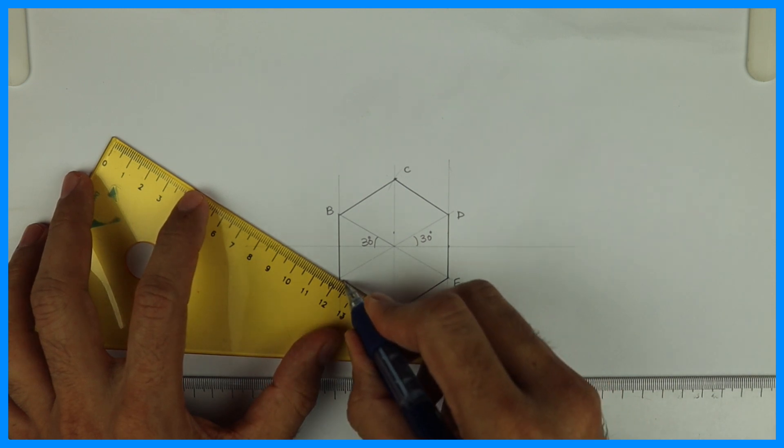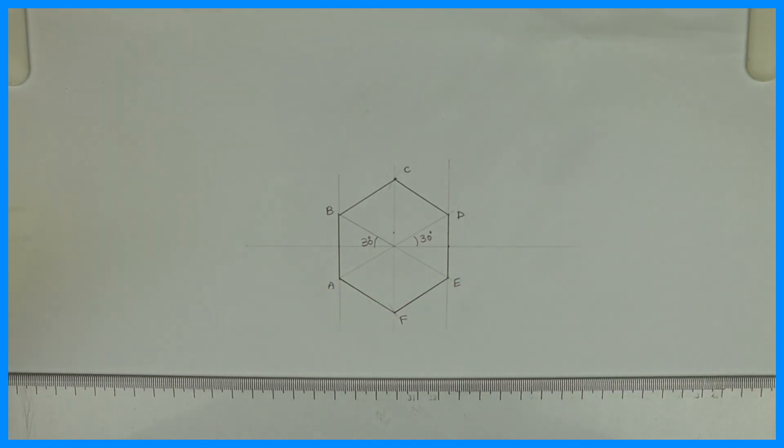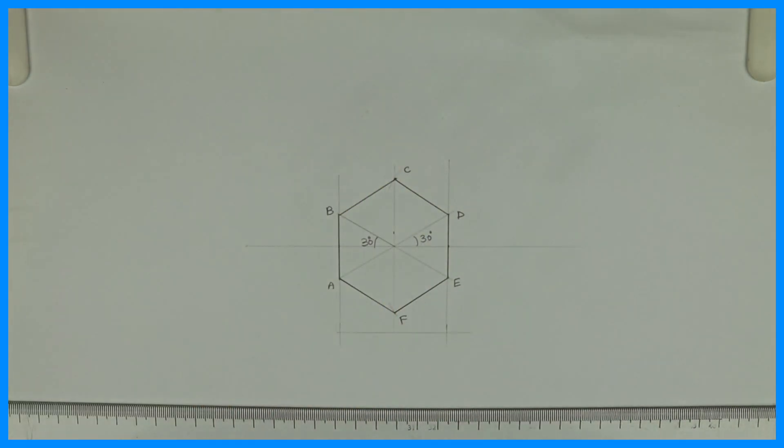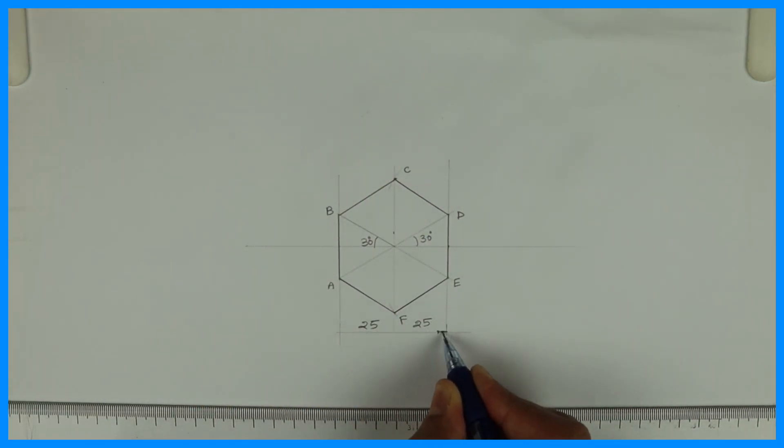When distance across two flats are given, that time we draw by using this method. This is 25, 25.